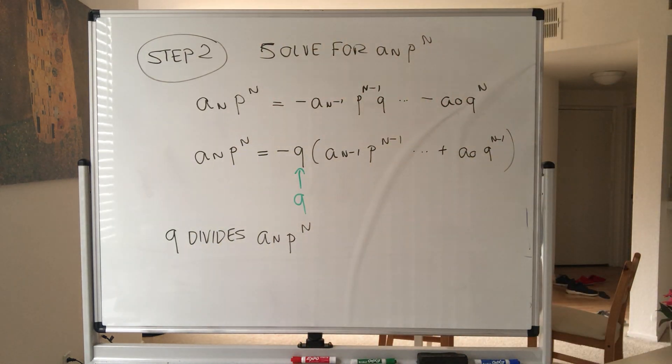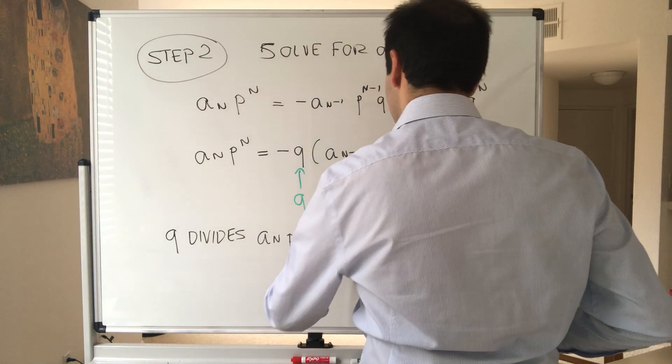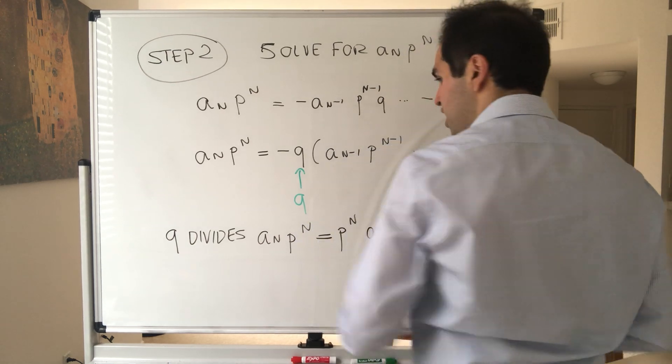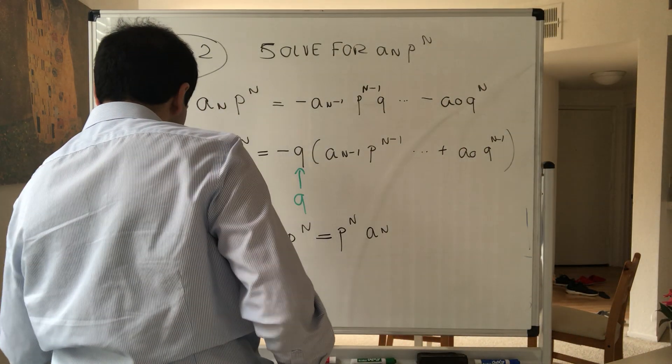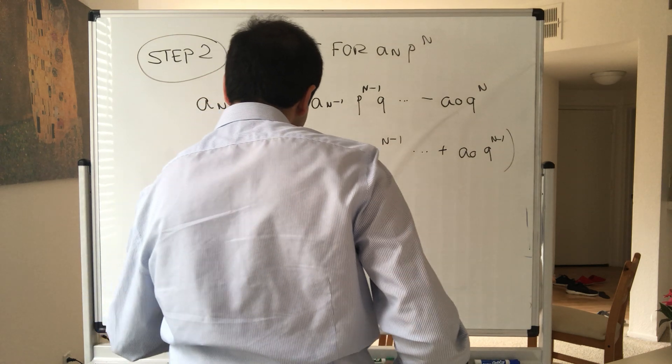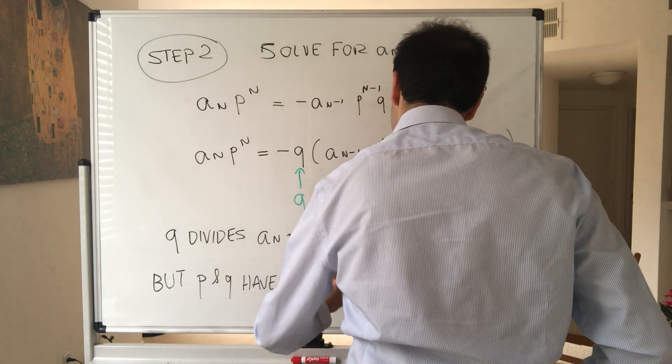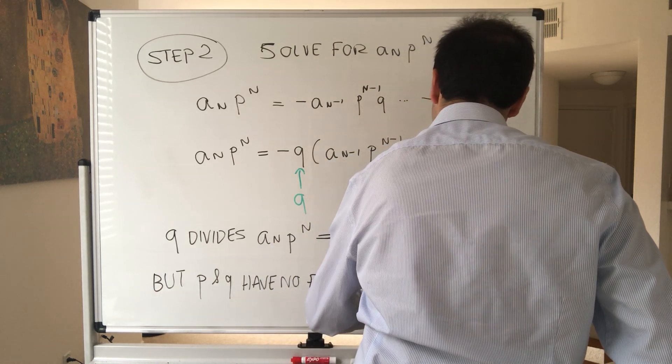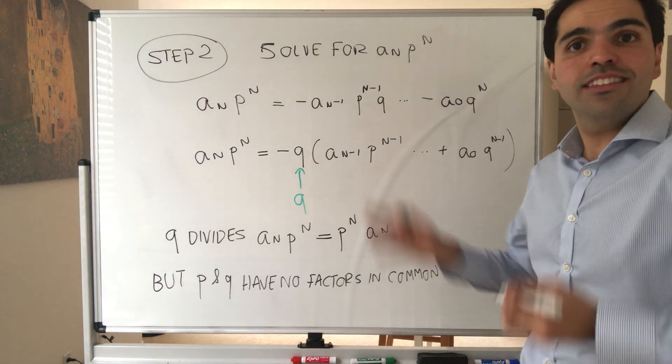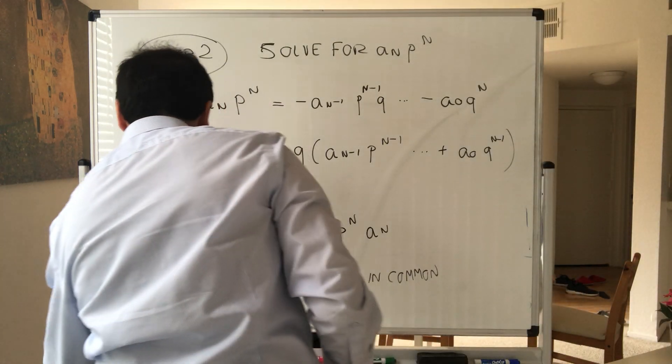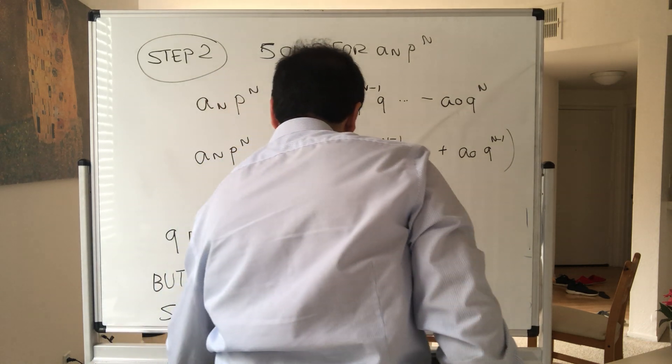Okay, but here's the thing: q divides this with—if you like—p^n a_n. Now remember that p and q are independent of each other. P and q have no factors in common. So even if you take products of p like p squared, p cubed, it's still independent of q.